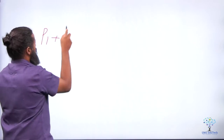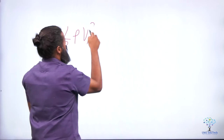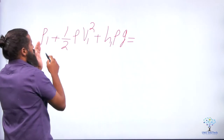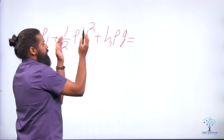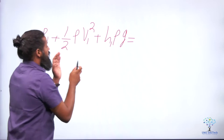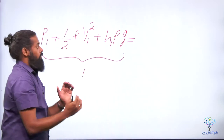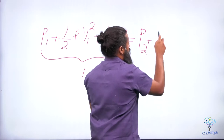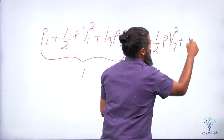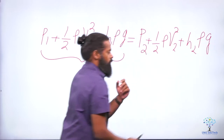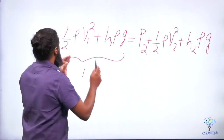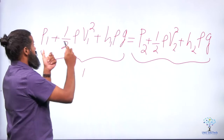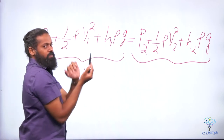When you rearrange that equation — change in kinetic energy equals work done — you get Bernoulli's equation: P1 + ½ρV1² + H1ρg = P2 + ½ρV2² + H2ρg. This represents pressure energy per unit volume, kinetic energy per unit volume, and gravitational potential energy per unit volume — and the total must be conserved across both sections.